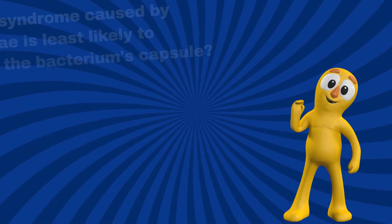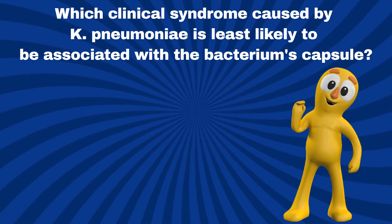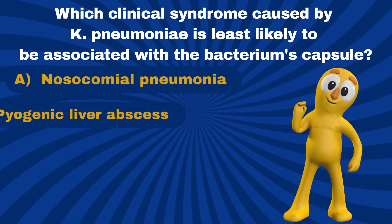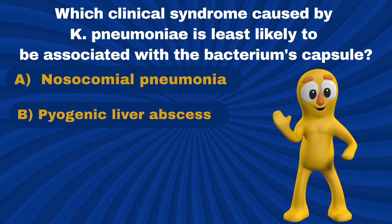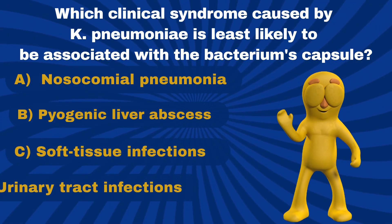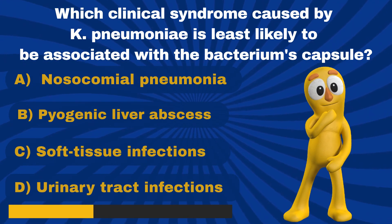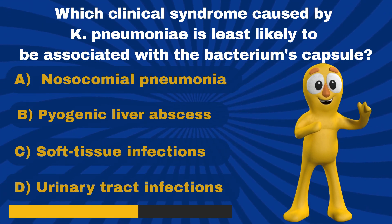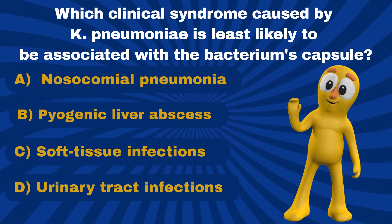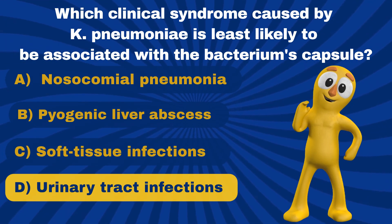Question 9. Which clinical syndrome caused by Klebsiella pneumoniae is least likely to be associated with the bacterium's capsule? A. Nosocomial pneumonia. B. Pyogenic liver abscess. C. Soft tissue infections. D. Urinary tract infections. That's right. It is D — Urinary tract infections.